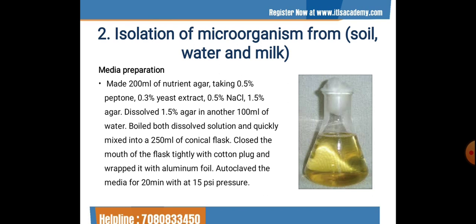Now that our sample is ready, the next step is isolation of microorganisms from soil, water, and milk. To get growth of these three samples, we first have to make a media on which we grow our microbes — a kind of nutrient home for these microorganisms. For media preparation, we make 200 ml of nutrient agar by taking 0.5% peptone, 0.3% yeast extract, 0.5% NaCl, and 1.5% agar.